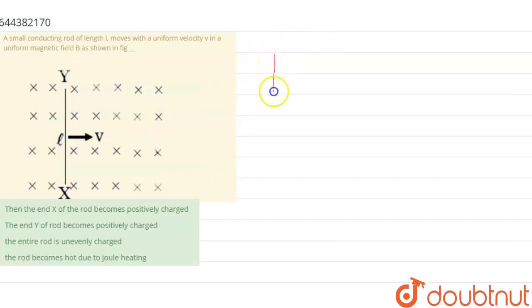Suppose this is our rod and it is moving with velocity V. This is x axis, this is y point, x point and y point. If the rod is moving with velocity V, there will be a magnetic field which also moves along the rod and the magnetic field will be inward to the plane.